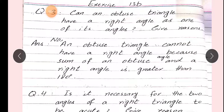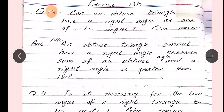Question number 3: Can an obtuse angle have a right angle as one of its angles? Give reasons. Is pita, hamne is mein yeh poocha gaya, is question mein, ki kya obtuse angle aur right angle jo hai, woh obtuse angle mein right angle ban sakta hai - obtuse triangle mein.